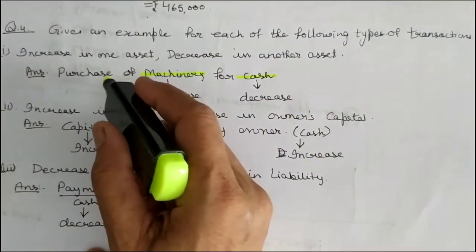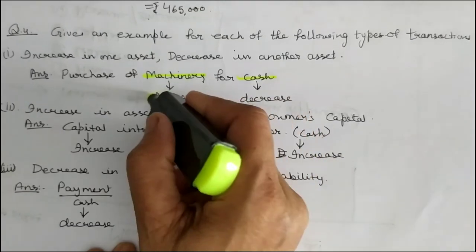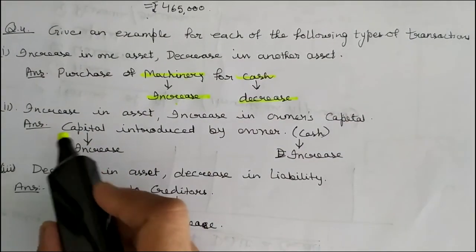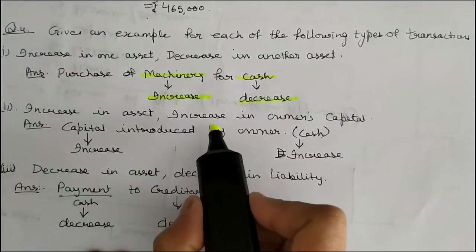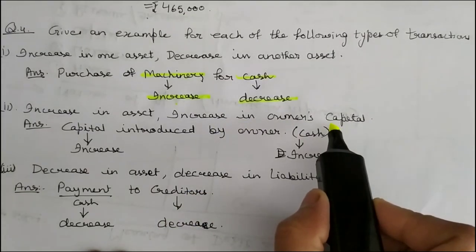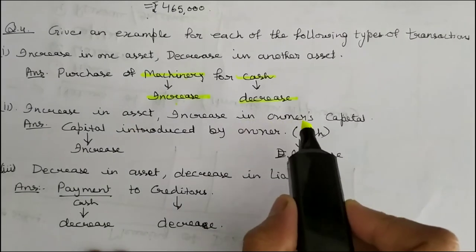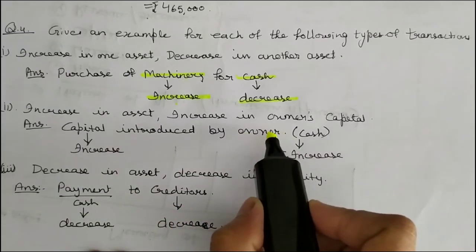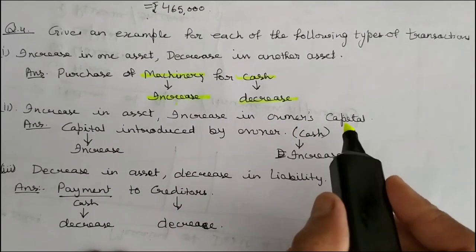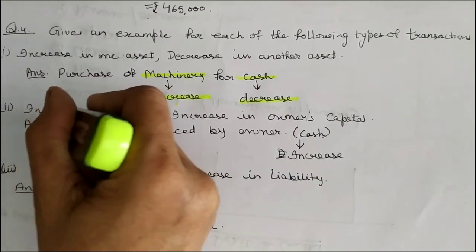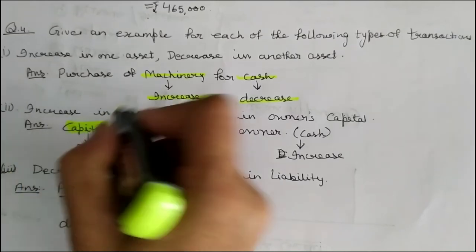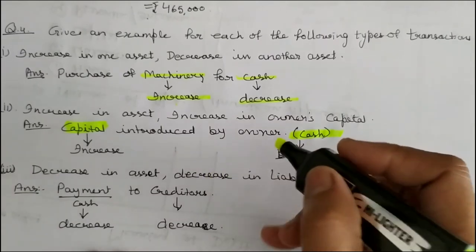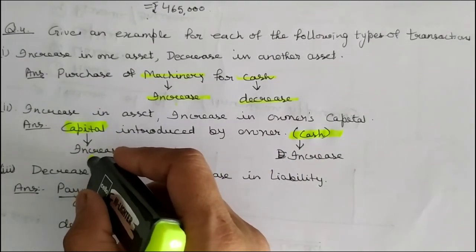If you are purchasing machinery, then the machinery account will increase and the cash will decrease, because you are purchasing for cash. The next type of transaction is increase in asset and increase in owner's capital. An example of this is capital introduced by the owner — he is bringing cash into the business, so cash increases and capital also increases at the same time.